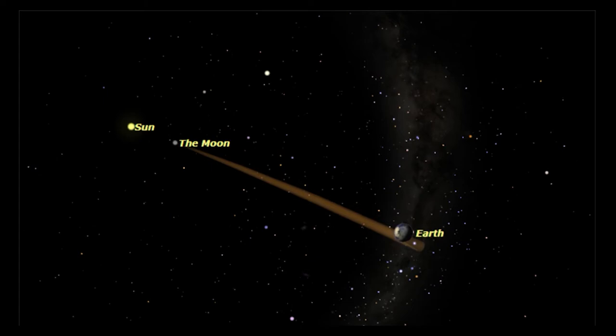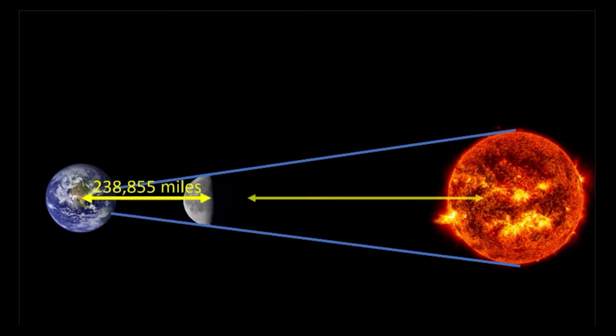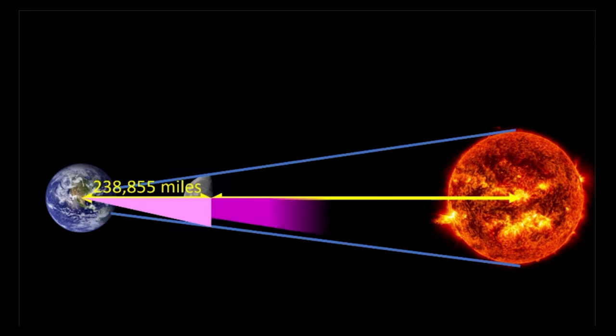We can also illustrate a total solar eclipse like this, though remember, this diagram is certainly not to scale. I think you can see that if we know the distance from Earth to the moon, we can use that and a little more math to calculate the distance to the Sun.